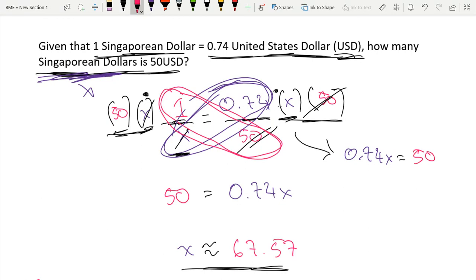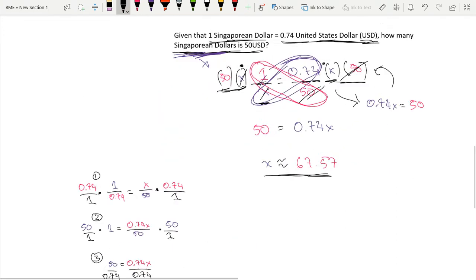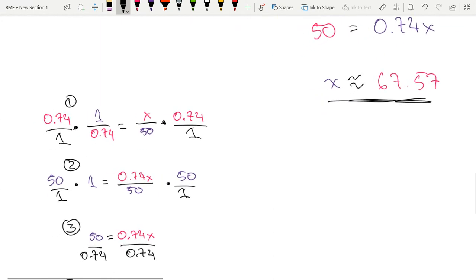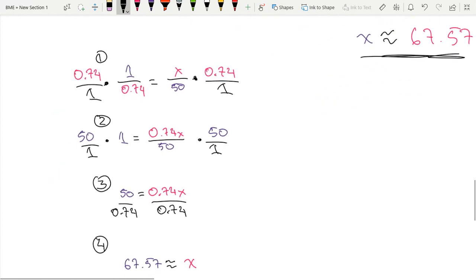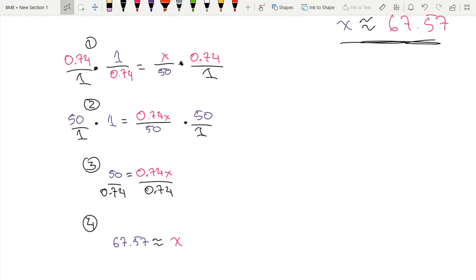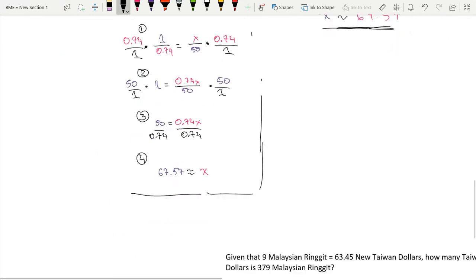But I do not want you to just memorize this. Always think about why this technique—cross multiplying—works before you do it. And here is another way that we could have made the proportion. You can pause the video and take a look at this over here.